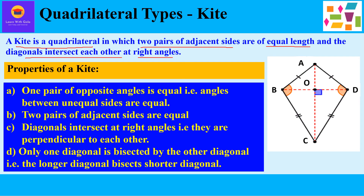The first property of a kite is that one pair of opposite angles is equal — the angles between unequal sides are equal. In the figure, AB and BC are two unequal sides with angle B between them; AD and DC are the unequal sides with angle D between them. Angle B is equal to angle D by CPCT, since in part one we proved triangle ABC and triangle ADC are congruent, so their corresponding parts are equal.